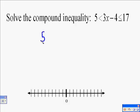The following problem is a compound inequality, referred to as an AND equation, because 3x minus 4 has to be greater than 5 and less than or equal to 17.